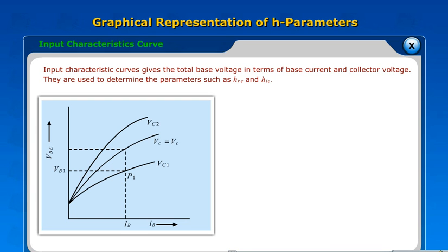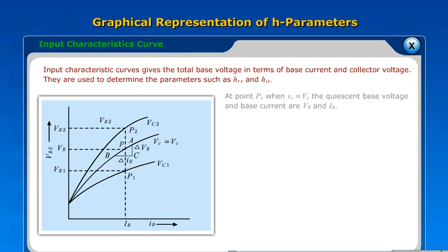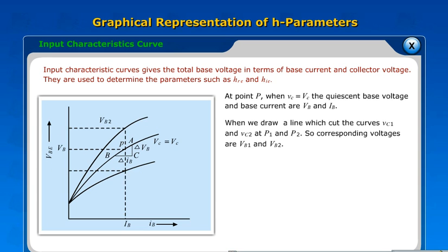They are used to determine the parameters such as h-ie and h-re. At point P, when VC equals VC, the quiescent base voltage and base current are VB and IB. When we draw a line which cuts the curves VC1 and VC2 at P1 and P2.